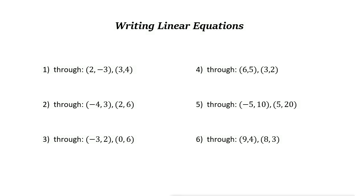Writing linear equations. The equation of a line in slope-intercept form is y equals mx plus b, where m is the slope and b is the y-intercept. To write the equation of a line, first we need to identify the slope. Then, if you have one point — the value of x and y — you can solve for b.